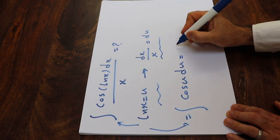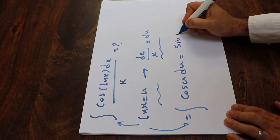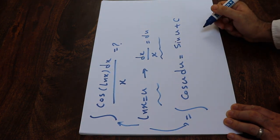We know that the integral of cosine u is equal to sine u plus c, the constant of integration.